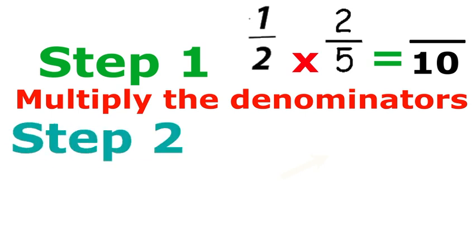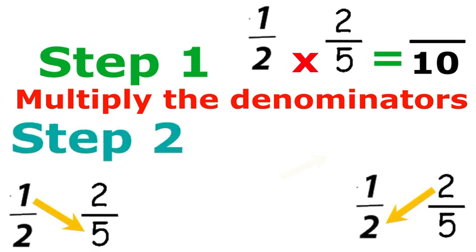Step two is in two parts. Multiply the left numerator by the right denominator, then multiply the right numerator by the left denominator to get two numbers.